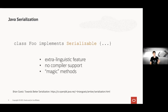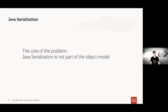The problem of Java serialization is really that it's not designed as part of the object model. There is no explicit, formalized way of extracting object state and reconstructing an object that is properly baked into the object model. This means it's actually possible to create impossible objects — a term coined by Joshua Bloch in Effective Java. Let's explore with an example what this actually means.